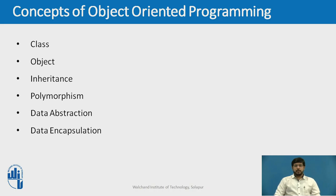The concept of object-oriented programming in Python focuses on creating code which is reusable. This concept is also known as Don't Repeat Yourself, i.e. DRY. Some principles of object-oriented programming are: class, object, inheritance, polymorphism, data abstraction, and data encapsulation. Together these form the pillars of object-oriented programming, and we will go through these principles one by one.